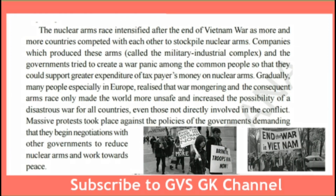The nuclear arms race intensified after the end of the Vietnam War as more and more countries competed with each other to stockpile nuclear arms. Companies which produced these arms are called the military-industrial complex. The governments tried to create a war panic among the common people so that they could support greater expenditure of taxpayers' money on nuclear arms. They created war panic, collected extra taxes from the public, and spent most of that money on nuclear arms.